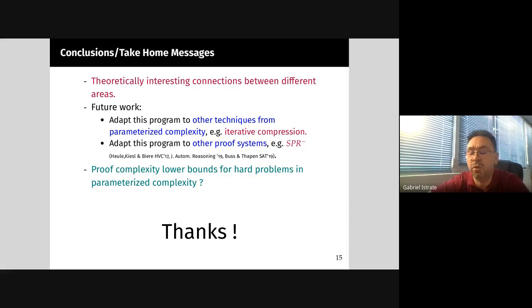Finally, a very interesting direction is sort of the converse one. An open question is, could we use lower bounds - could we prove lower bounds on proof complexity for hard problems in parameterized complexity? In a way, can we connect hardness in a parameterized sense to hardness in the proof complexity case? So that's it. Thank you.